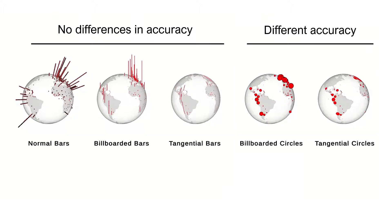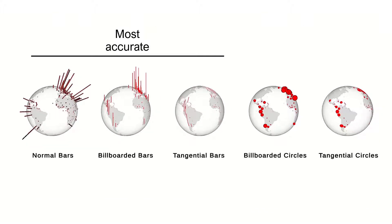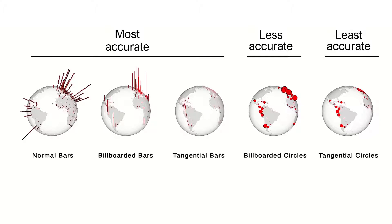However, for area proportional visualization, billboarded circles are more accurate than tangential circles. Overall, all length proportional visualizations are the most accurate. Billboarded circles are less accurate, while tangential circles are the least accurate.